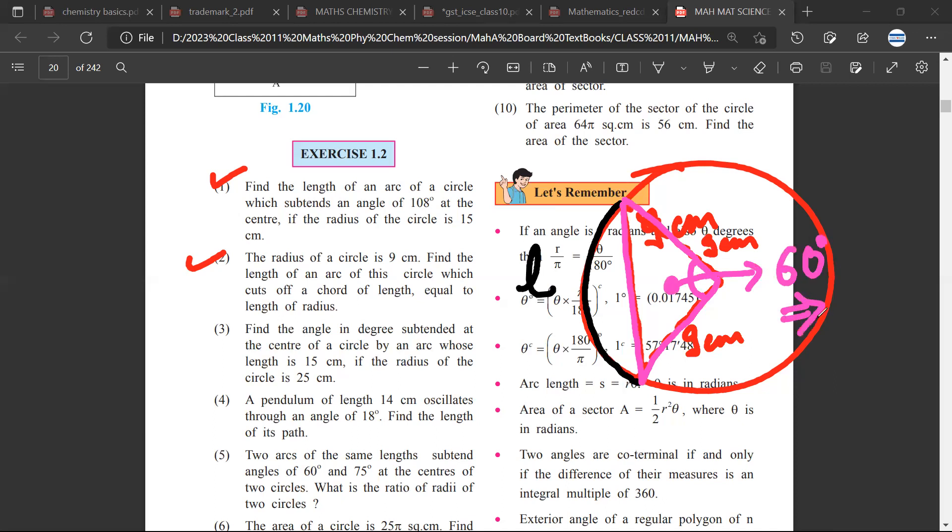Because the formula θ = l/r won't work for degrees, we'll have to convert this into radians. So 60 degrees, by practice we know, is equal to π/3 radians.